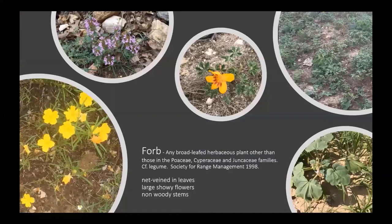Forbs are defined as any broadleaf herbaceous plant other than those in the Poaceae, Cyperaceae, and Juncaceae families — so other than grasses, sedges, and rushes. They typically have net-veined broadleaves, large showy flowers, and non-woody stems. Note that some plants in the woody component have a subfrutescent growth form — a woody base with a flexible stem — so they are classified as shrubs but often referred to as woody forbs.